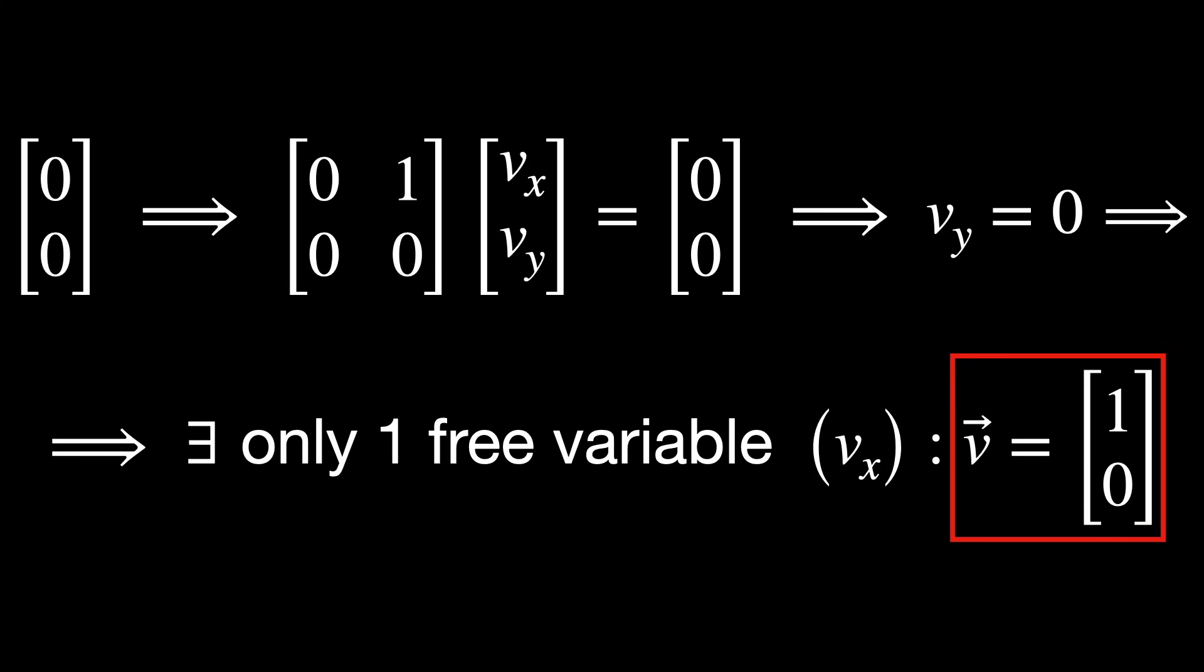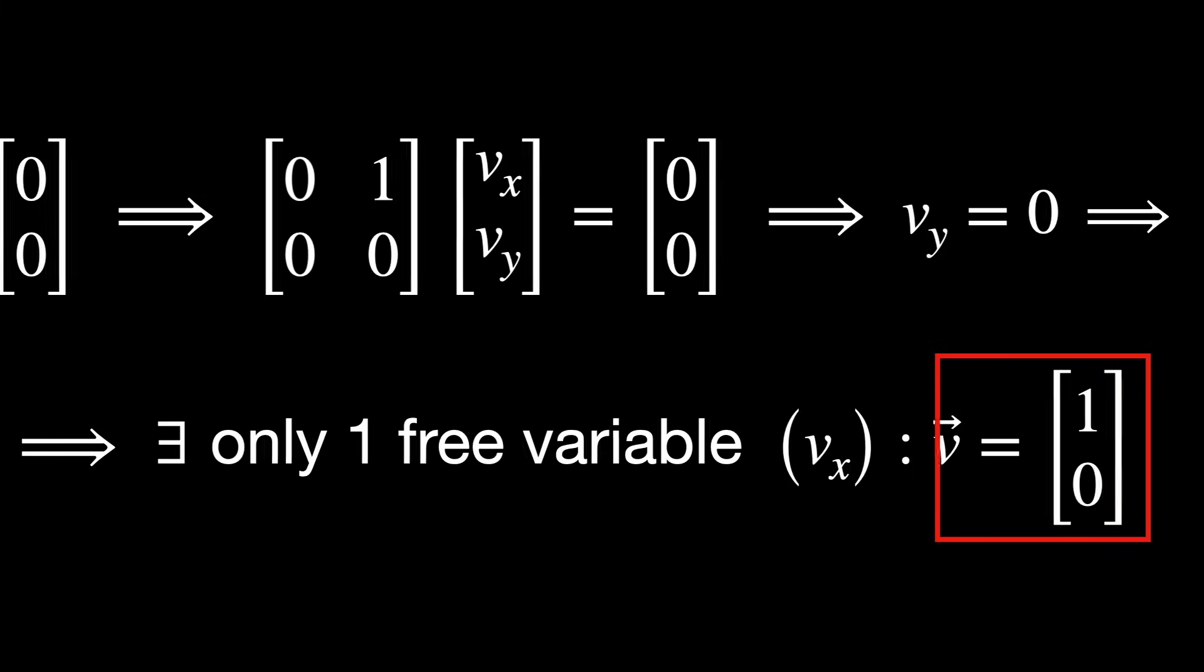And therefore, the eigenvector we found is [1, 0]. This is a degenerate eigenvector. We conclude that the matrix A is not diagonalizable, and that the two eigenvectors are linearly dependent.